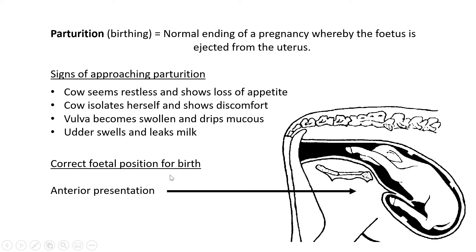There is a correct fetal position for birth. The correct position is called the anterior presentation. The head area — the anterior part — of the calf faces toward the cervix and vulva, meaning the head and both front legs come out first, then the rest of the body, and the hind legs last. This is the correct position the calf must be in for birth; usually fewer complications occur if the calf lies like this.